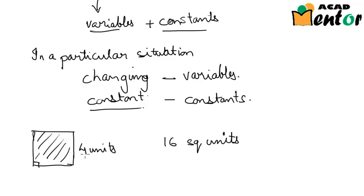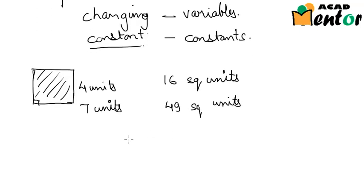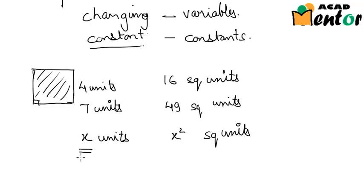Now what if the side of this square was 7 units? Then the area would have been 49 square units. And what if the side measured x units? In that case the area would have been x² square units. So here x is a variable — it can assume many different values. It could be 7, 4, 3, or any other number representing the side of a square.